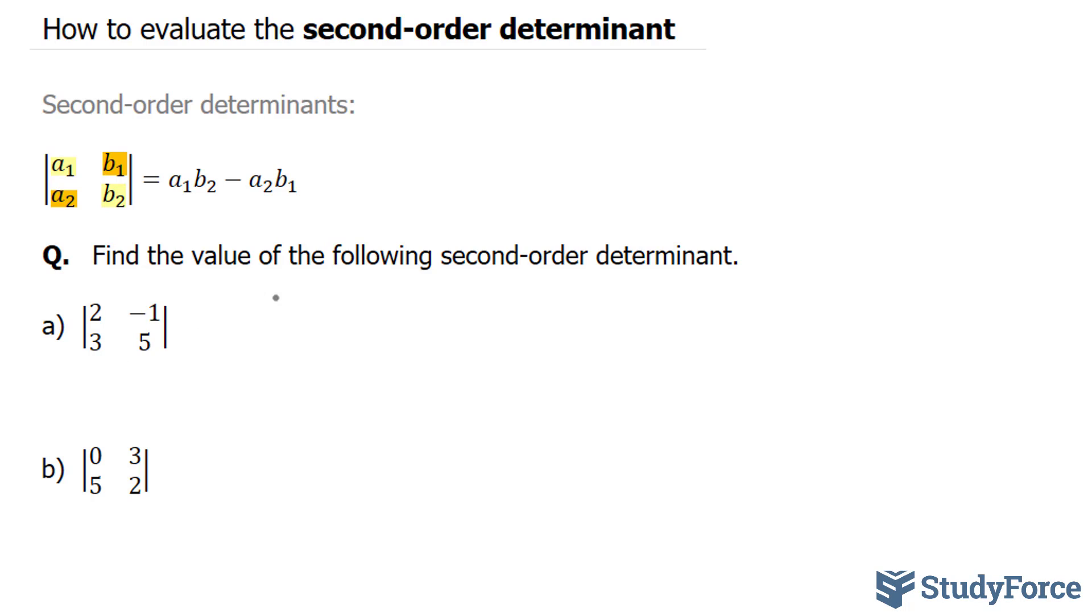So for question A, we have a 2 by 2 determinant. And what we have to do is use this formula, which tells us that we multiply a1 with b2, and we subtract the product of a2 and b1.